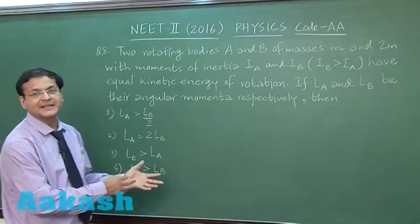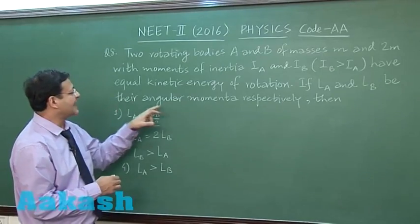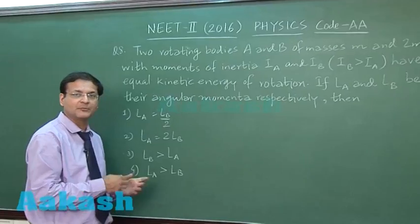So you have to correlate kinetic energy with angular momentum. Now they are saying if LA and LB be their angular momentum respectively, then you have to find out the relation between the angular momentum of A and B.